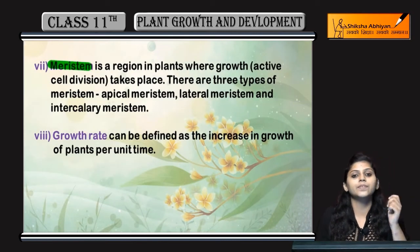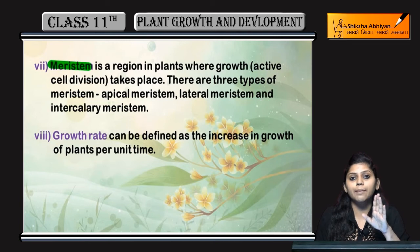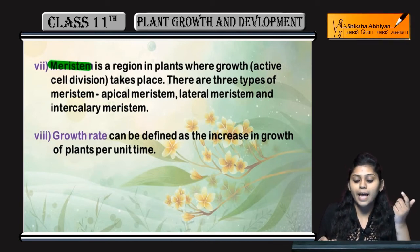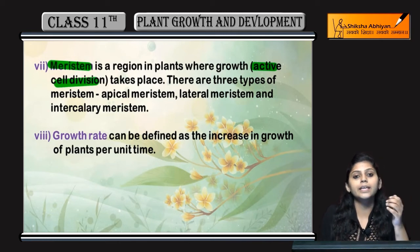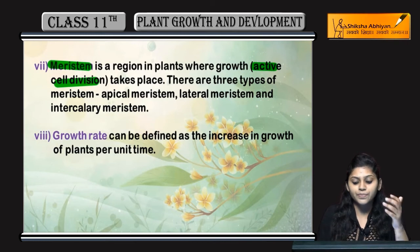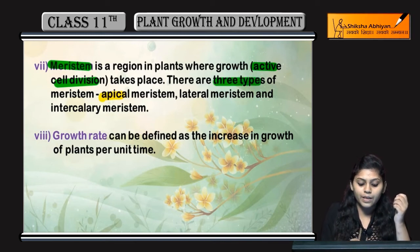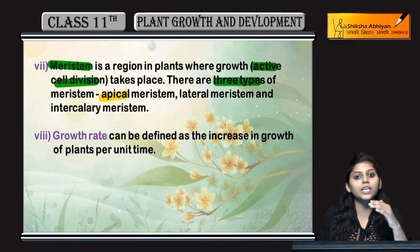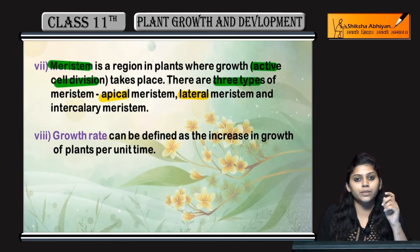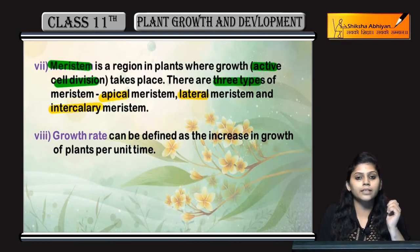Next is meristem. Meristem woh region hai plant ka jahan pe active cell division possible hai. Active cell division mainly hoti hai apex region of shoot or root. There are three types of meristem: Apical meristem jo apices mein hoti hai, elongate karti hai, length badhata hai. Second is lateral meristem, jo girth badhata hai. Third is intercalary meristem jo internodes mein present hoti hai.